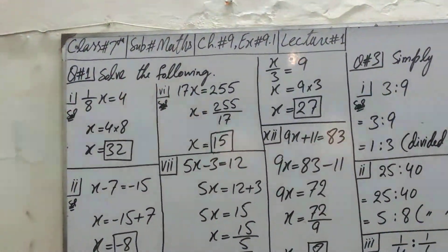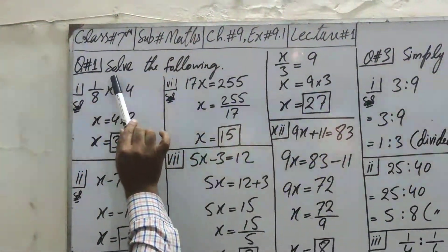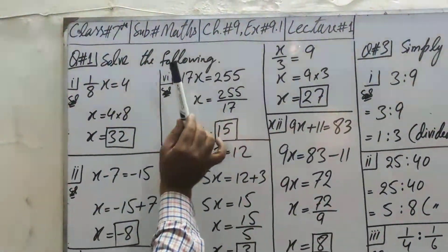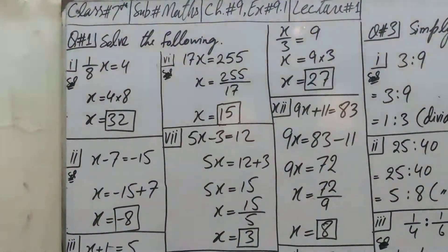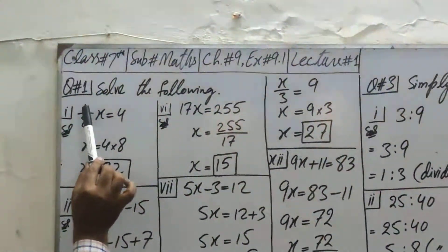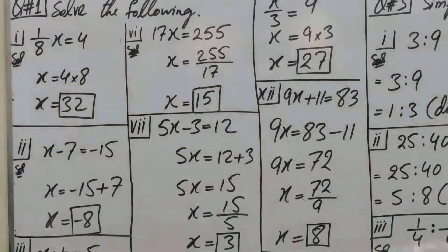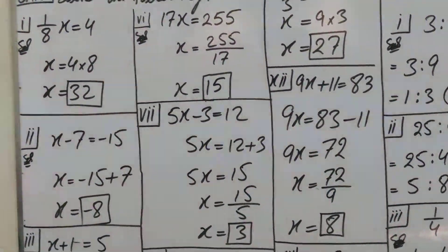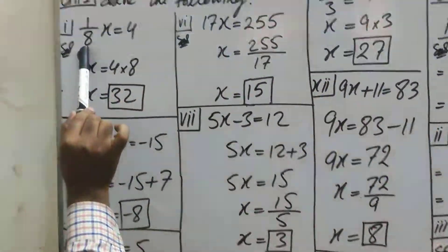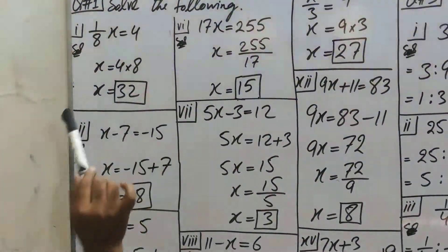This chapter is on the equations. We have given the question number 1, solve the following. 1/8 × x = 4. Now I have to find x value. This 8 is divided so multiply it. 4 × 8 is 32.